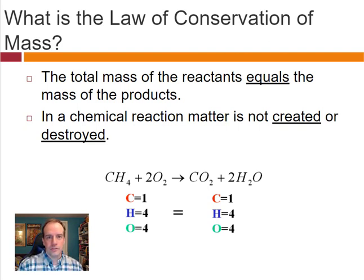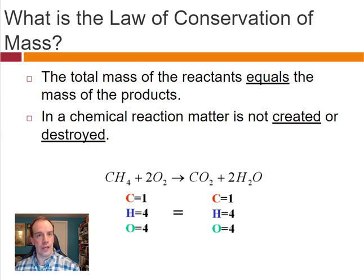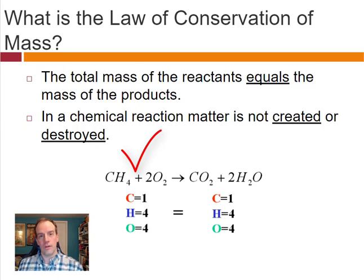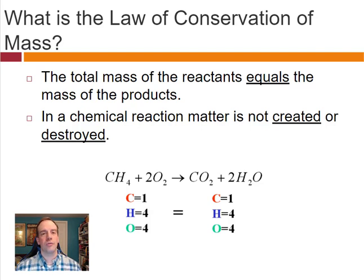In a chemical reaction, we have the law of conservation of mass: all the elements present at the beginning of the reaction are also there at the end. Matter is not created or destroyed in the process — all the same stuff is there at the beginning and at the end. Those elements have just been rearranged, bonded in a different way.